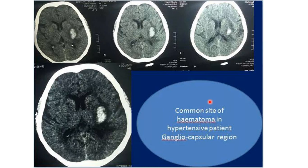The common sites of intraparenchymal hematoma are mainly the gangliocapsular region due to rupture of small perforators, particularly the lenticulostriate artery. You can see examples here at the basal ganglia distribution — different cases, all at the basal ganglia — and these are mostly due to hypertensive stroke.